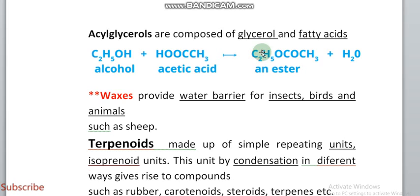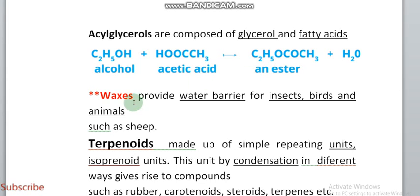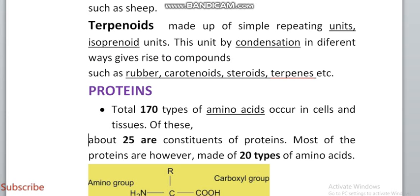Acylglycerols are composed of glycerol and fatty acids. Just as alcohol and acetic acid give an ester, glycerol and fatty acid combine to give esters, forming different fats. Waxes provide a water barrier for insects, birds, and animals such as sheep. Terpenoids are made up of simple repeating units of isoprenoids and give rise to rubber, carotenoids, steroids, and terpenes.